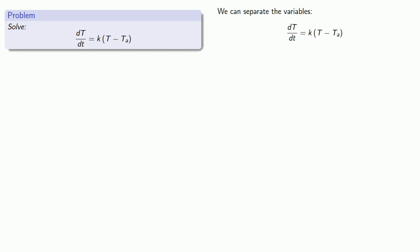Let's separate our variables. We want to get all the capital T's over onto the left and all the lowercase t's over onto the right.